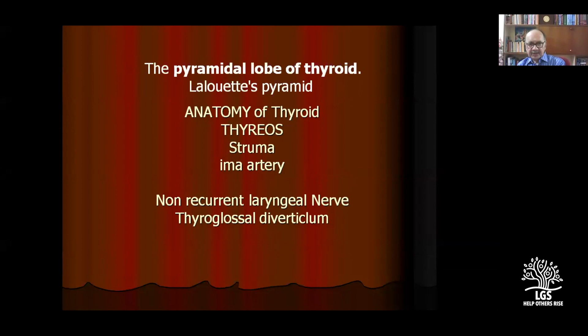The pyramidal lobe of the thyroid arises from the isthmus. Some people can have a tumor arising from the pyramidal lobe. When doing a total thyroidectomy, you need to identify the pyramidal lobe and remove it — otherwise called the Lolloquay pyramid. The anatomy: thyroid means 'shield,' and struma is the name used everywhere.